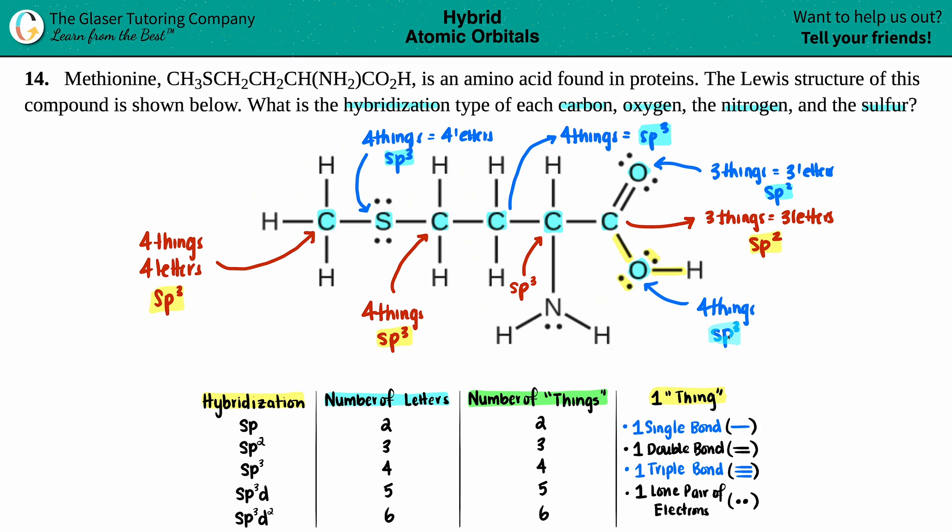And the last one. We just got to do the nitrogen. Let's erase these so we don't get confused. Now we have this nitrogen all the way down at the bottom here. It's got this long single bond, that's one thing. Another single bond, that's two things. Another single bond, that's three things. And one lone pair, that's a total of four things. Four things, SP3. And we are done. How's that? Did we do them all? I'm just scanning. I see all the carbons, all the oxygens and nitrogens. We're good.